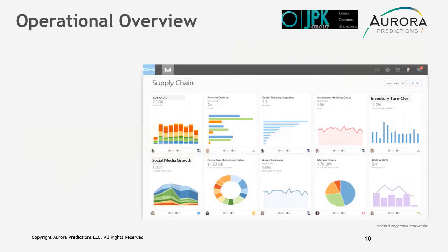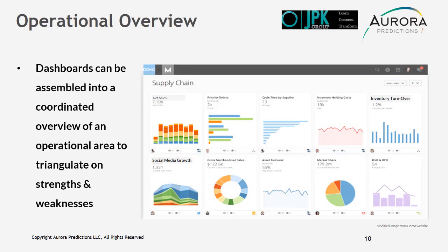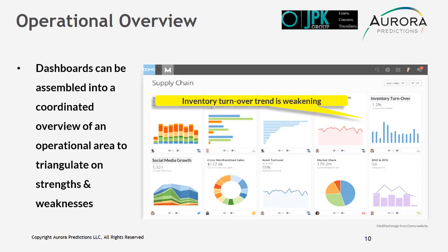An operational overview. Dashboards can be assembled into a coordinated overview of an operational area — here, supply chain — to triangulate on strengths and weaknesses. For example, inventory turnover trend is weakening, as is social media growth.